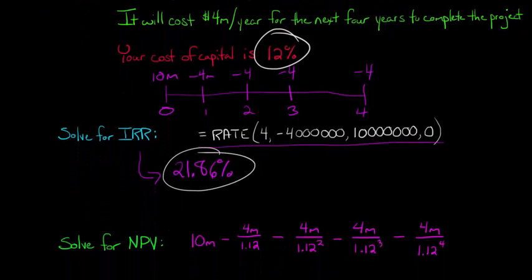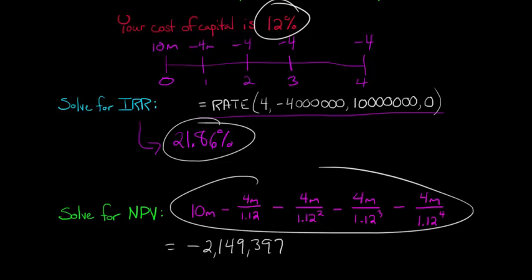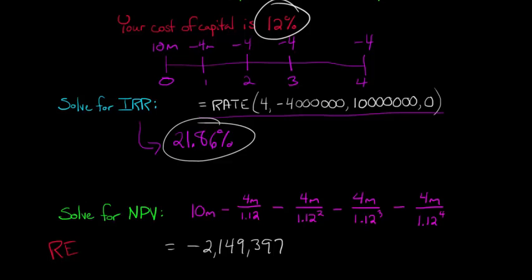However, if we were to calculate out the net present value, we would actually see that the net present value, which here's the math if you want to calculate it out by hand, otherwise you can just take it on faith, that it's negative $2,149,397. All right, I've just calculated it for you to save time. So the net present value is actually negative, right? So see that negative sign? This is negative. So what does that mean? That means that you reject this project.